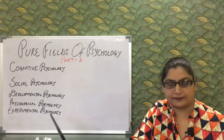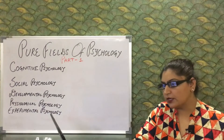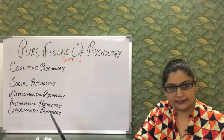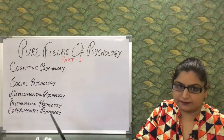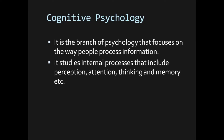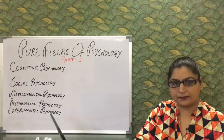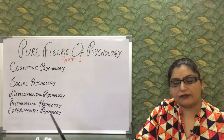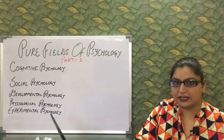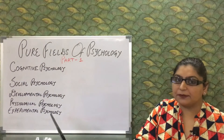The first field under pure psychology is cognitive psychology. It is a branch of psychology that focuses on the way people process information. It studies internal processes that include perception, attention, thinking, and memory. We all have negative emotions and negative feelings, but some people are so obsessed with their pessimistic thinking patterns that it becomes difficult to function in daily life.